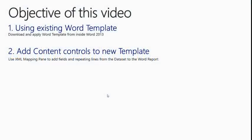At the end of this video, we will have seen how easy it is in Microsoft Dynamics NAV 2015 to use an online Word template when designing our Word reports. Microsoft Word supports the creation of great-looking documents, and it is often much easier to start with an existing Word template — for example from the community — than from scratch, and then tweak the visual design afterwards. The objective is to show you how to find a template and apply it to our Word report. We will download and apply a Word template from inside Word 2013 and import this into our report. We will then use the XML Mapping pane to add content controls to the template, upload fields, and a repeating line from the dataset to the Word report.